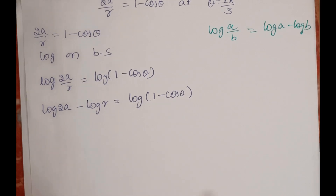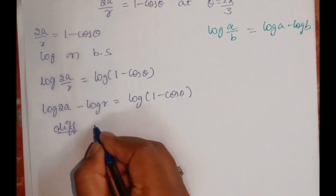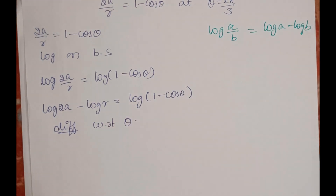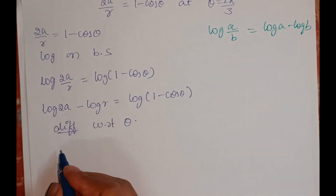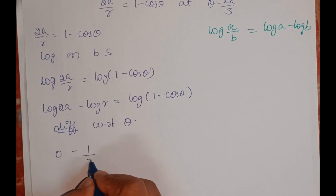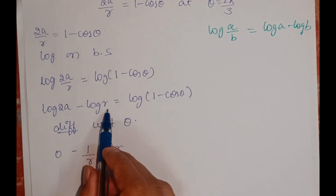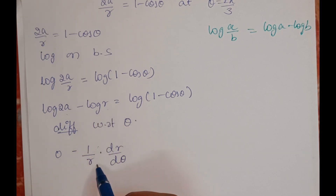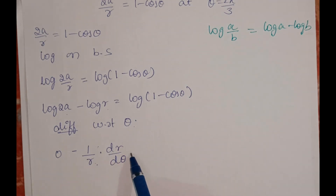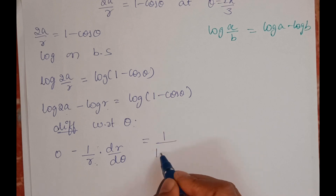Now differentiate with respect to θ. If I differentiate a constant it becomes 0, minus 1/r · dr/dθ — because differentiation of log r is 1/r, and differentiation of r with respect to θ is dr/dθ.